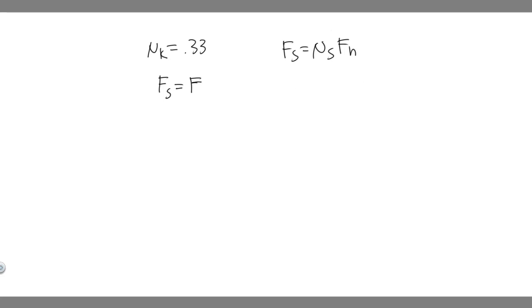We can just write it like this: μ_s times F_n is going to be equal to the force being applied to it. What's the force being applied? It's just going to be ma, so F equals ma. It's just going to be the mass multiplied by the acceleration, so it's equal to ma.